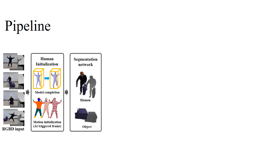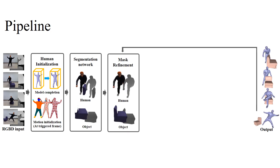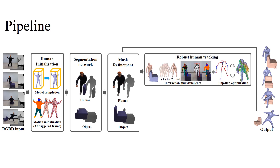Second, we propose a novel scene decoupling scheme embracing the scene semantic cue to distinguish and reconstruct human and object separately. To prevent the uncertainty caused by interactions, we iteratively refine the segmentation by utilizing previous reconstruction results.